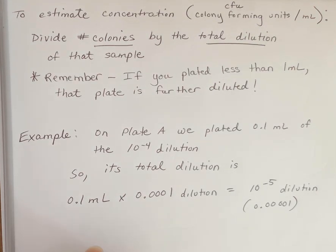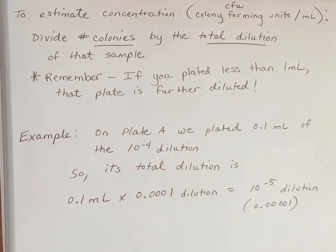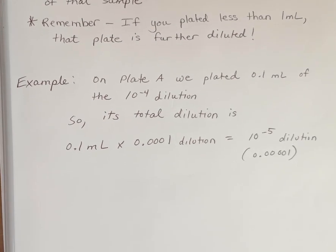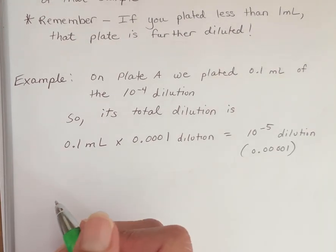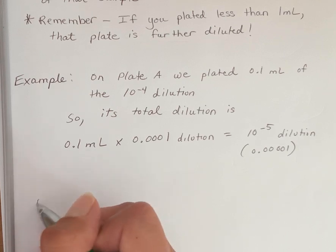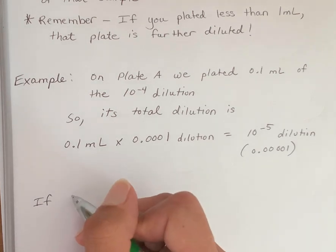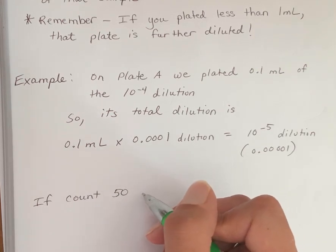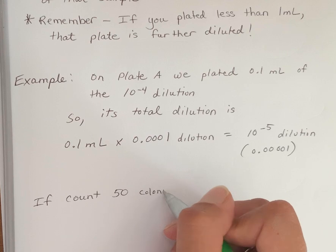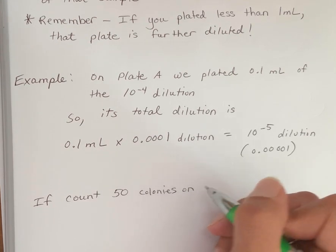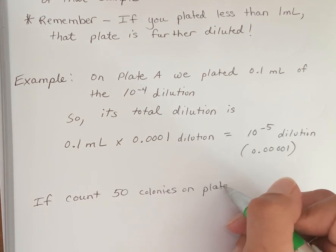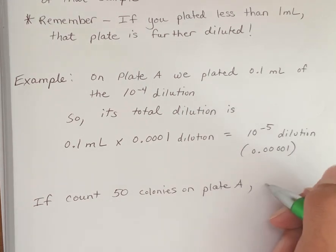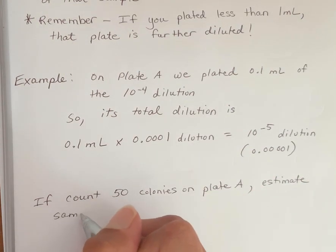Okay, so let's figure out how you would do that on a plate calculating your number of colonies. So if we count 50 colonies on plate A, you would estimate the sample the following way.